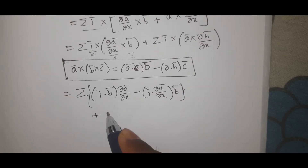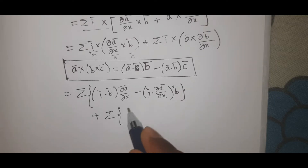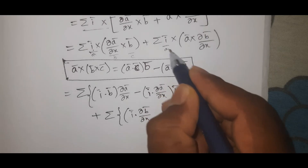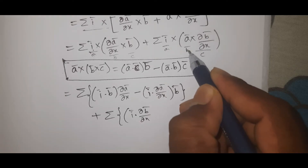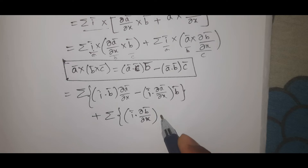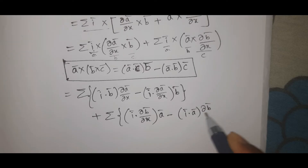Expanding further: summation i̅ dot (∂b̄/∂x) into Ā, with A, B, C identified. Result is Ā minus i̅ dot Ā times ∂b̄/∂x.